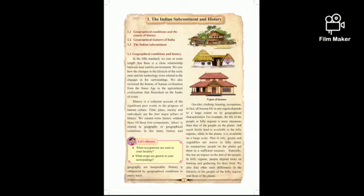For example, the life of people in a hilly region is hectic and strenuous because there is no fertile land, no vegetation, no agricultural activities, so they depend on hunting and gathering. Compared to life in the plains, where lots of agricultural activities are carried on, people have abundant vegetation and food. We can find such differences in the lifestyle of people of hilly regions and those of the plains.